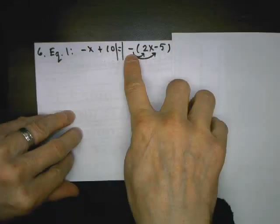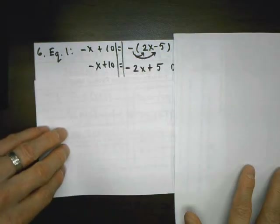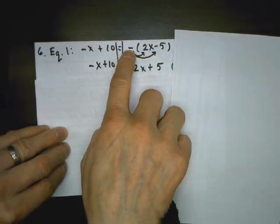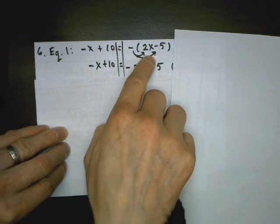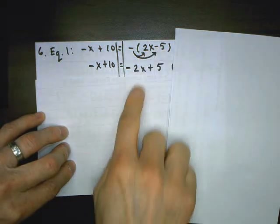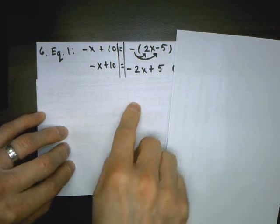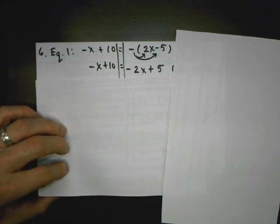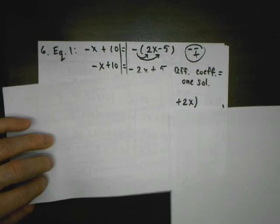Equation six — problem six: we have some equations. We're going to figure out which of these has no solution. All we're going to do is simplify both sides — we don't even need to solve these. If I simplify both sides of all these equations, I can make a decision on how many solutions each has. Whenever I have a negative outside, I should do my rule for subtraction first. I distribute a negative one: negative times two x is negative two x, negative times negative five is positive five — I'm taking the opposite of everything inside. If I have different coefficients, there's automatically one solution.